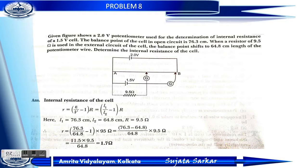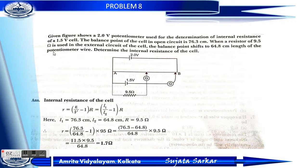Problem 8: The figure shows a 2 volt potentiometer used for determination of the internal resistance of a 1.5 volt cell. The balance point of the cell in open circuit is 76.3 cm. When a resistor of 9.5 ohm is used in the external circuit of the cell, the balance point shifts to 64.8 cm. Determine the internal resistance of the cell.